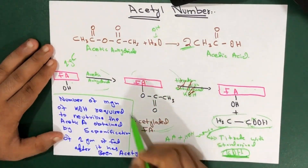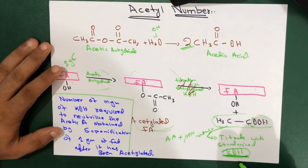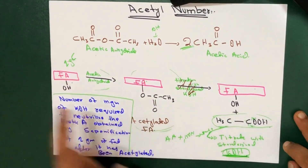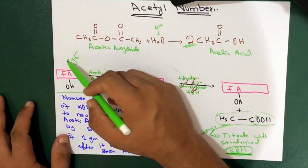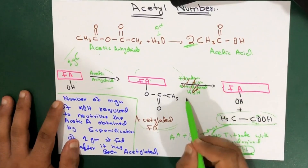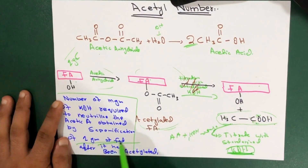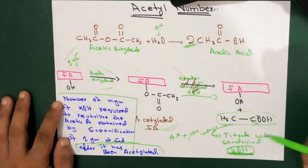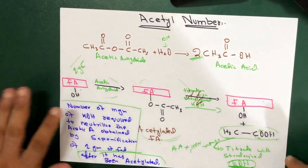After the fat has been Acetylated, we get the whole definition — this is the Acetyl Number. I hope I've made clear what the Acetyl Number means: it's the number of milligrams of potassium hydroxide required to neutralize the Acetic Acid obtained by saponification of one gram of fat after it has been Acetylated — meaning it was the Acetylated fatty acid. After this we get to the Acetic Acid, and that is reacted with potassium hydroxide. This is a very easy concept. Please comment and let us know what you would like to learn.